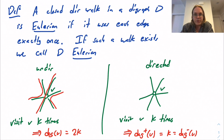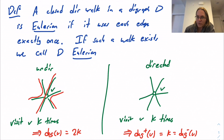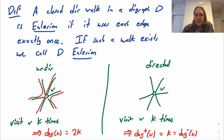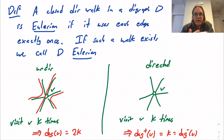Every time you leave v, you're using one of the edges directed away from v. You visit v exactly k times, using k of those edges, and that must be the whole out-degree. So the short of this is that we have a very similar looking condition in the directed setting: if you have a directed graph with an Eulerian walk, then every vertex must have in-degree equal to its out-degree — this balanced property.